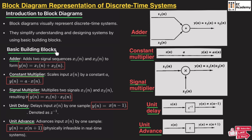There are different kinds of basic building blocks. The first one is the adder. The adder will add two signals. For example, if we take x1(n) and x2(n) as two signals, the output of the adder is given as y(n) = x1(n) + x2(n). In the block diagram, addition is represented as a circle with a plus sign.